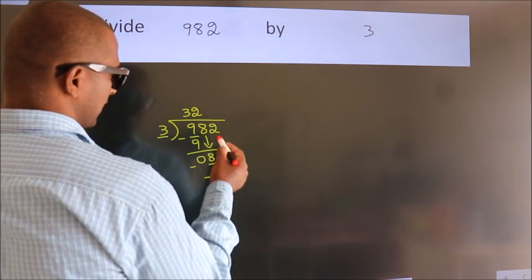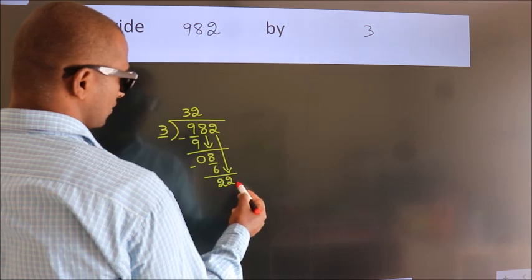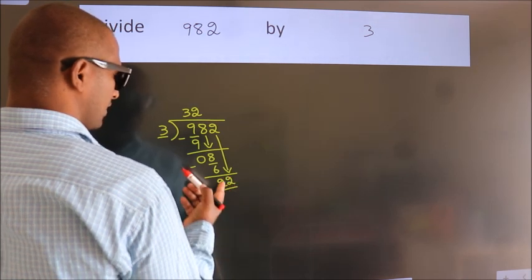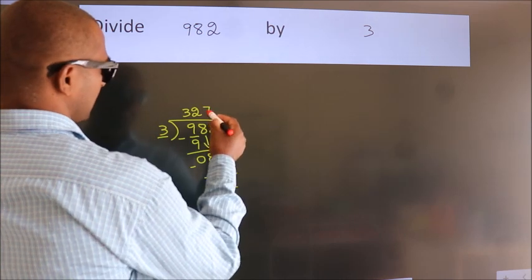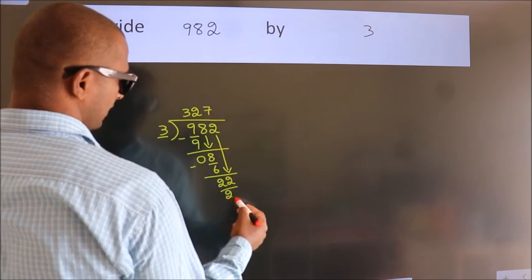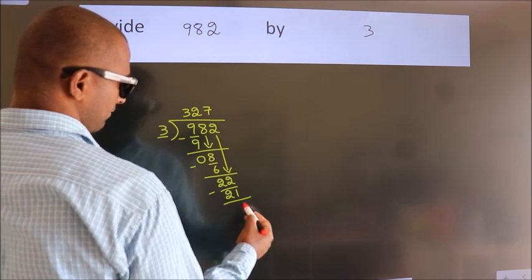After this, bring down the beside number. So, 2 down. So, 22. A number close to 22 in 3 table is 3 times 7, 21. Now we subtract. We get 1.